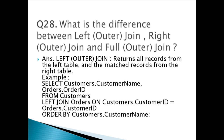Question twenty-eight: What is the difference between LEFT OUTER JOIN, RIGHT OUTER JOIN, and FULL OUTER JOIN? LEFT OUTER JOIN returns all records from the left table and the matched records from the right table. The LEFT JOIN keyword returns all records from the left table (customers) even if there are no matching records in the right table (orders).